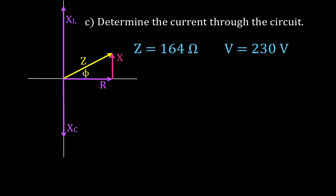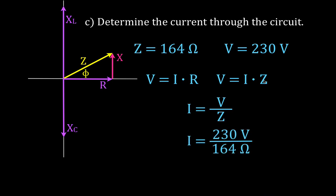Next we determine the current through the circuit using Ohm's law adapted for AC: V equals I times Z, so I equals V divided by Z. That's 230 volts divided by 164 ohms, giving a current of 1.40 amperes. Note: pay attention to whether the voltage given is RMS or peak — the result will match whichever you use, so don't mix up RMS and peak values.